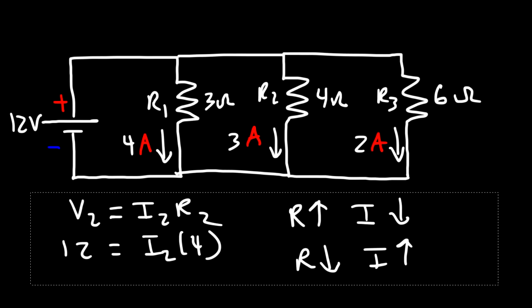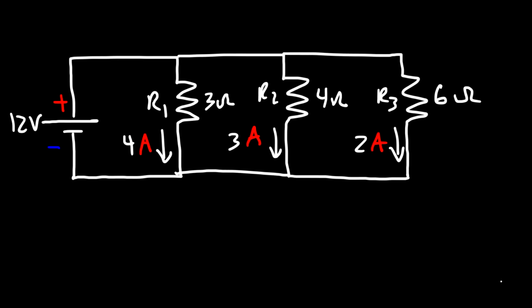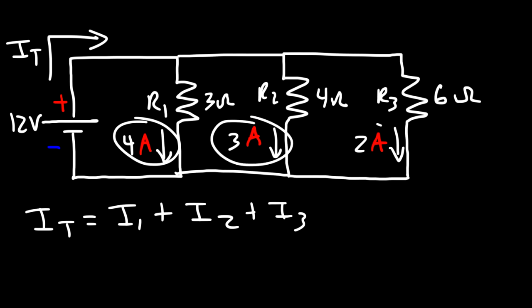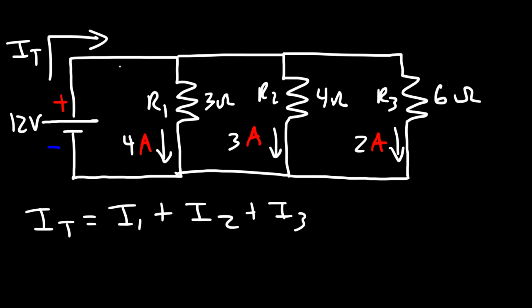Now, what is the current that leaves the battery? The total current in the circuit, which we'll call IT, that leaves the battery is going to be the sum of the individual currents. So it's going to be 4 plus 3 plus 2. 4 plus 3 plus 2 is 9, so the total current here is 9 amps.